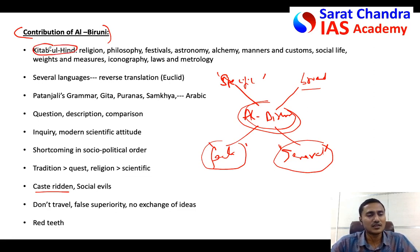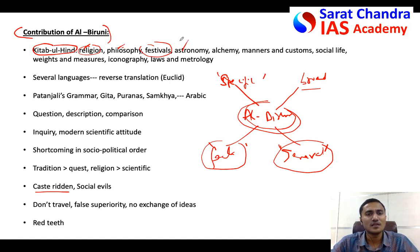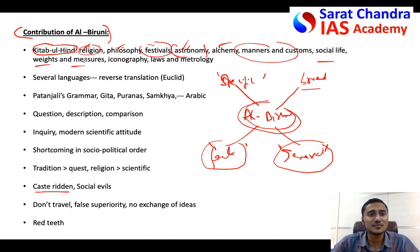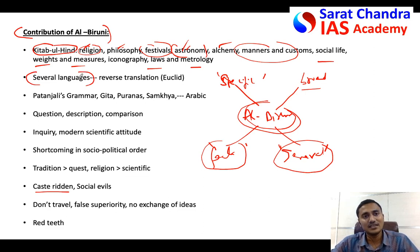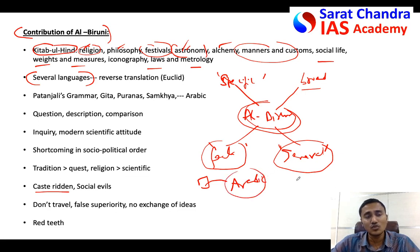In the book Kitab-ul-Hind, Al-Baruni discussed various things: different religions of India, particularly Brahmanism, philosophies like Sankhya philosophy, different festivals, astronomy — he studied ancient Indian astronomy books — and also alchemy, different manners and customs, social life, weights and measures, and mathematics. Al-Baruni knew several languages: Sanskrit, Pali, Brahmi script, Arabic, and Persian. That is why he not only translated Indian books into Arabic but also translated European books into Sanskrit.